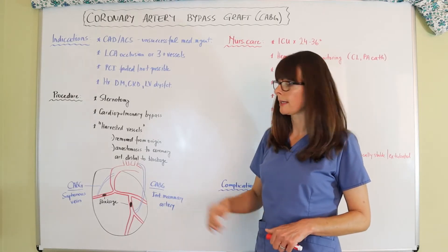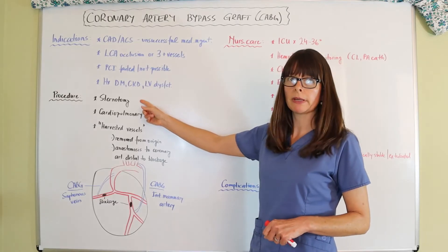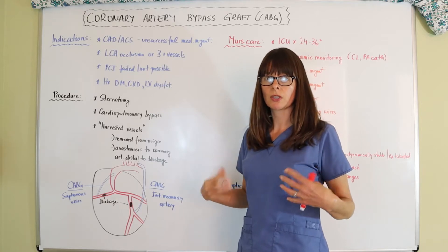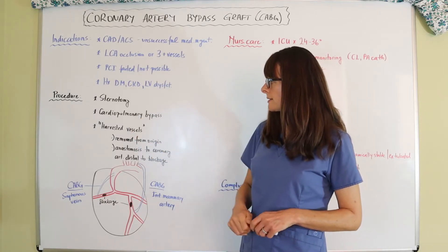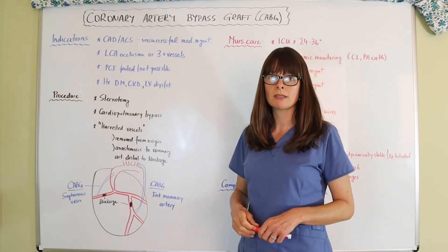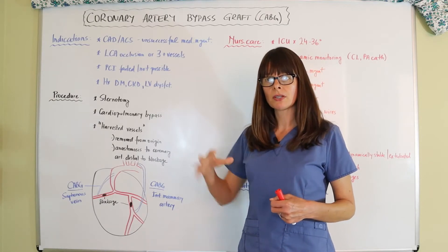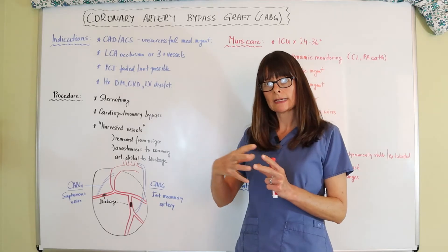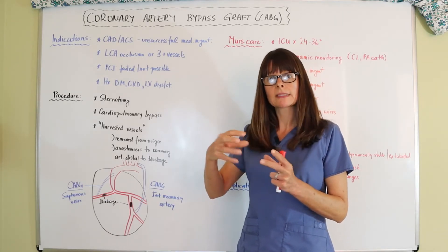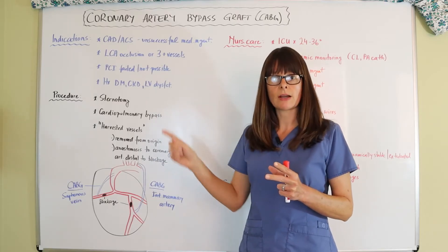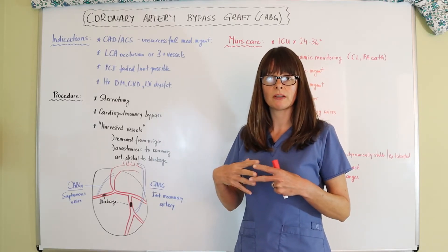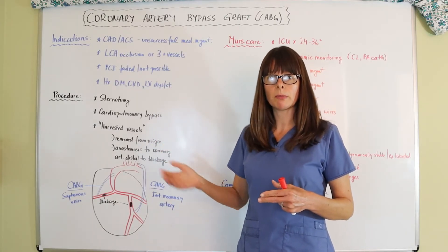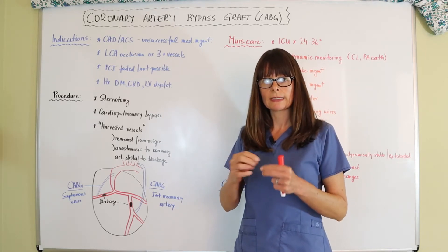Let's look at what this procedure looks like. First, it's a sternotomy — the sternum is opened to expose the heart so the surgeon can work on it. The patient is also placed on cardiopulmonary bypass, which means blood is pumped out of the heart into a machine where it is oxygenated and then returned to the patient. This deflates the heart so it doesn't have to beat, while the machine handles oxygenating and pumping blood during surgery.